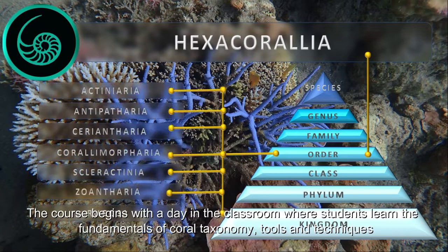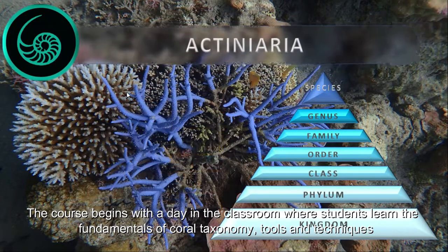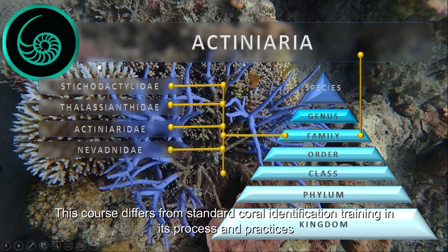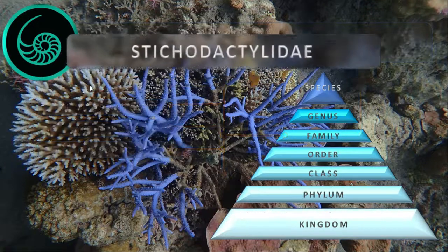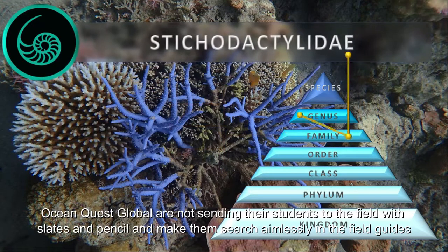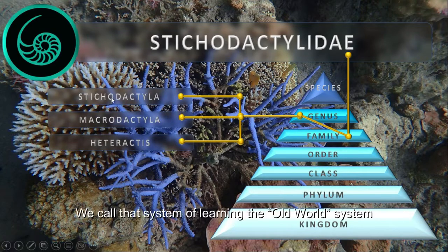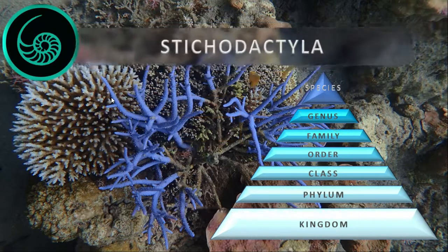The course begins with a day in the classroom where students learn the fundamentals of coral taxonomy, tools, and techniques. This course differs from standard coral identification training in its process and practices. OceanQuest Global are not sending their students to the field with slates and pencil and making them search aimlessly in the field guides. We call that system of learning the old world system.